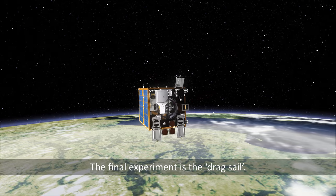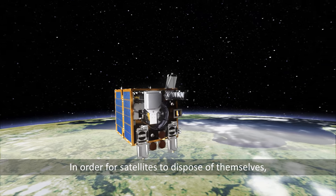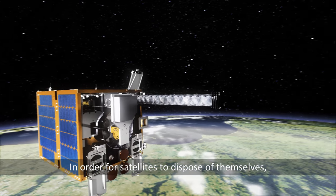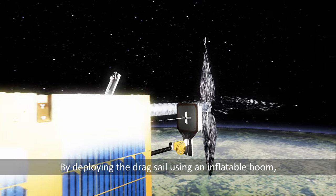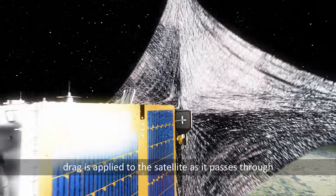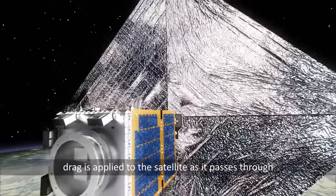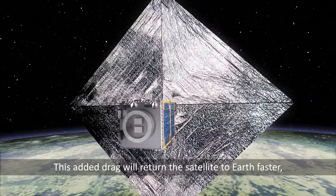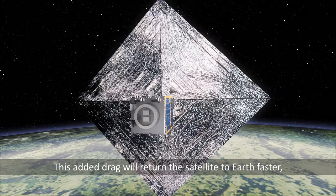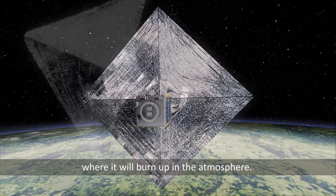The final experiment is the drag sail. In order for satellites to dispose of themselves, future missions may have such drag sails attached. By deploying the drag sail using an inflatable boom, drag is applied to the satellite as it passes through the outer elements of the Earth's atmosphere. This added drag will return the satellite to Earth faster, where it will burn up in the atmosphere.